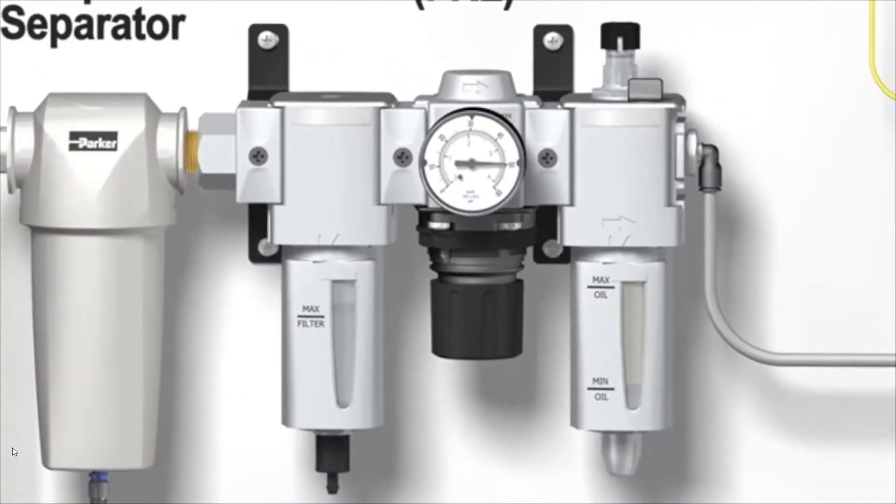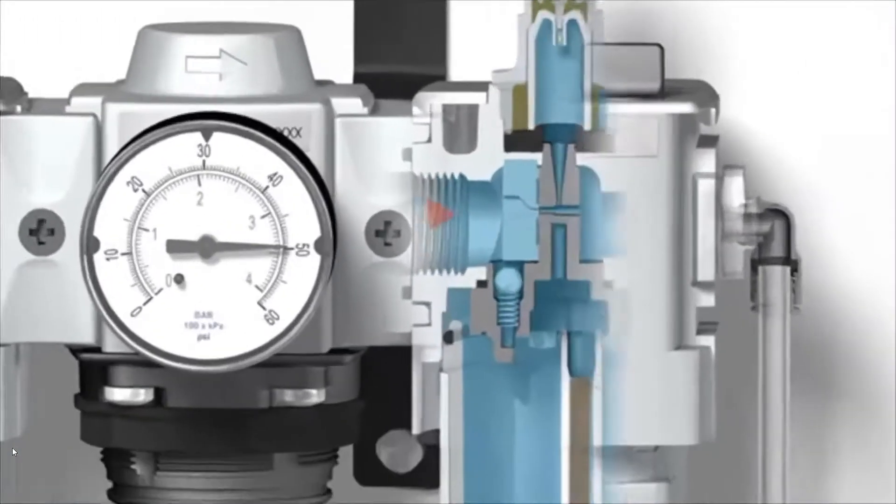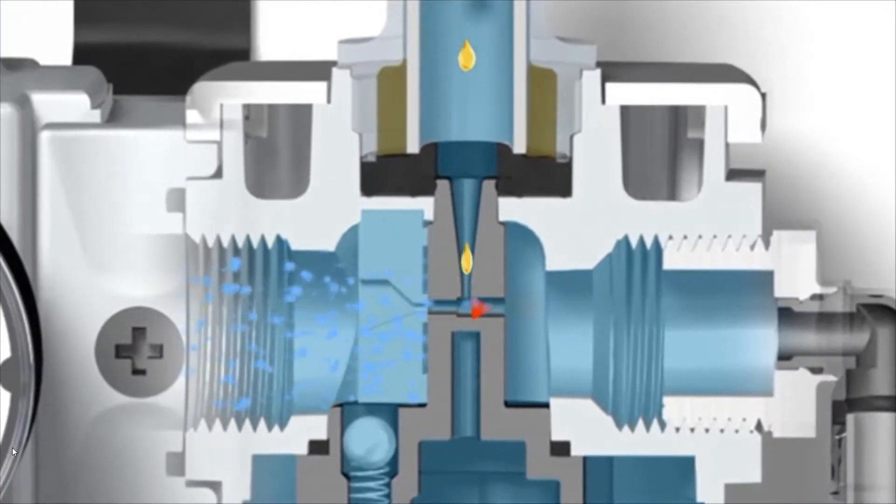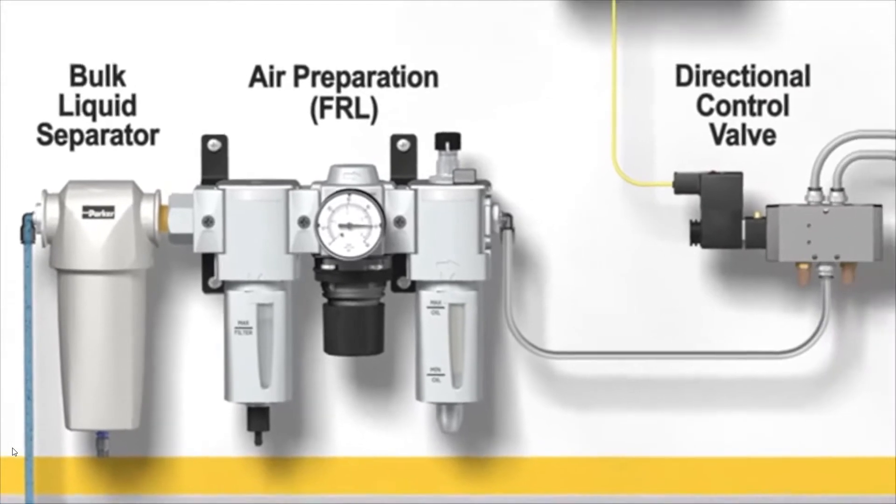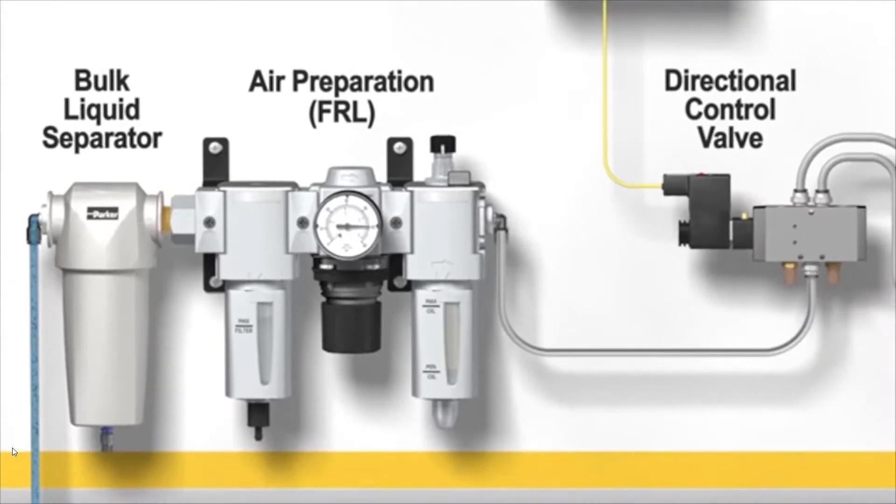Finally, in specific applications, such as air motors or pneumatic tools, a lubricator can be added to distribute a fine mist of lubricant into the compressed air to help lubricate downstream components. Now that the compressed air is clean, dry, and set to the correct pressure for the application, the next step is to direct it where to go to create motion.